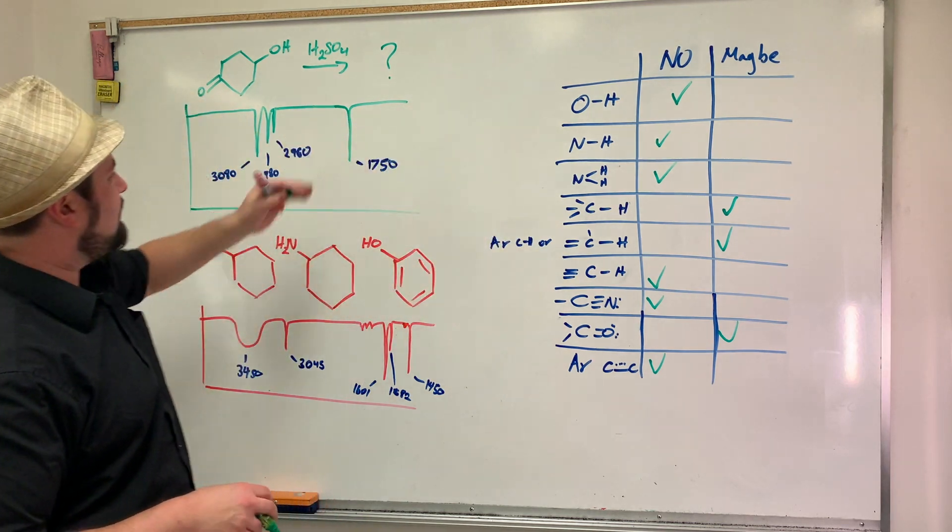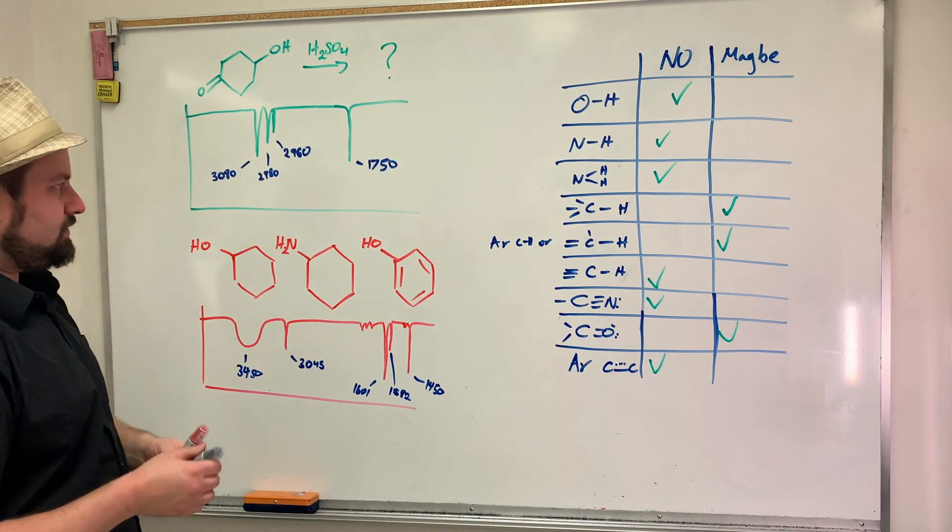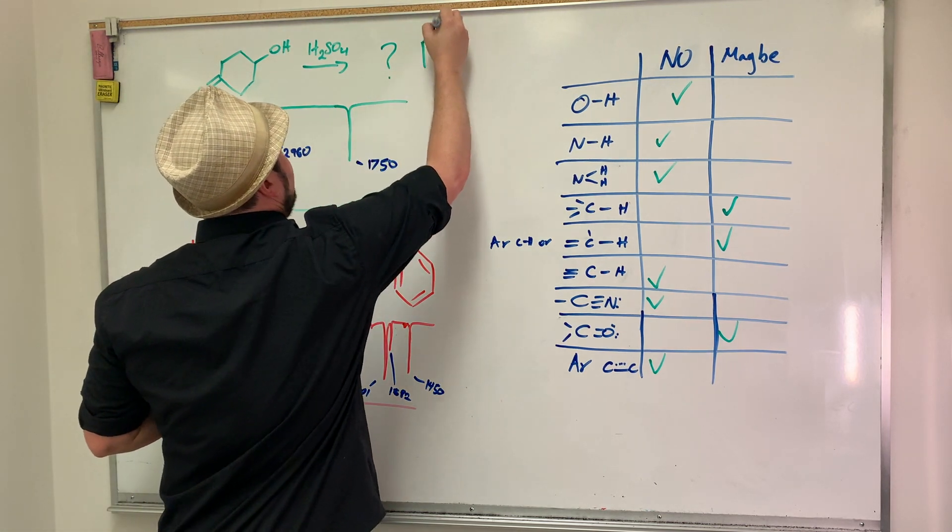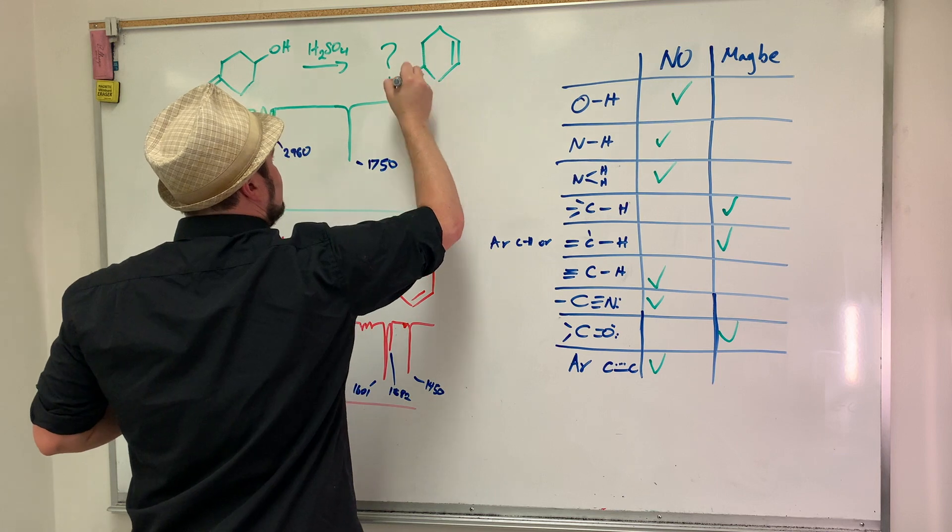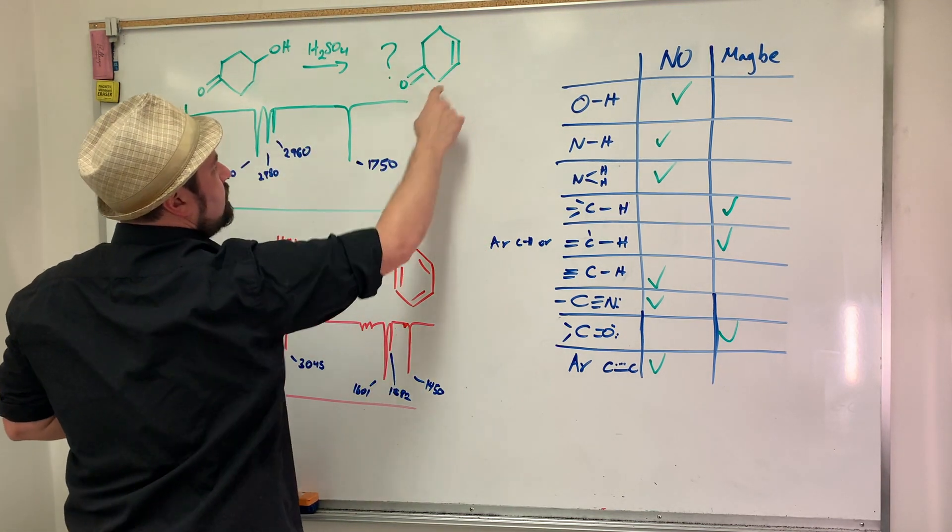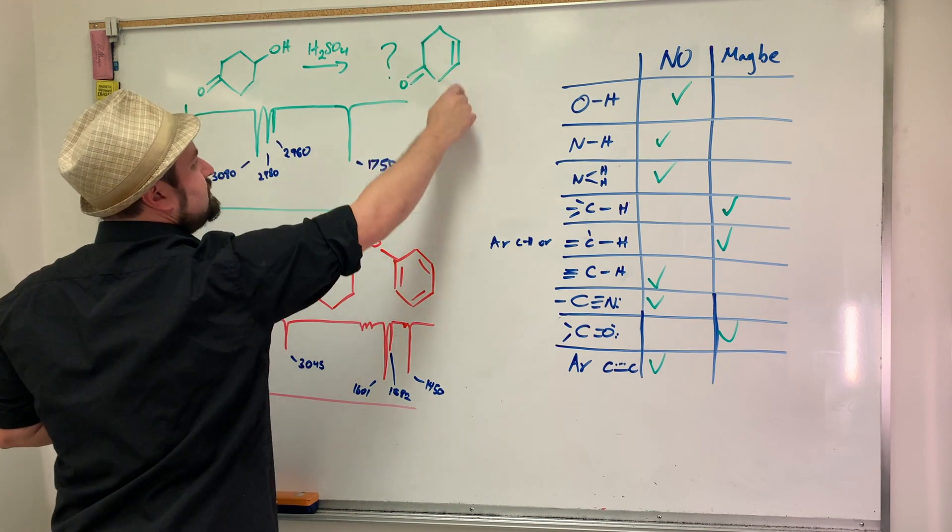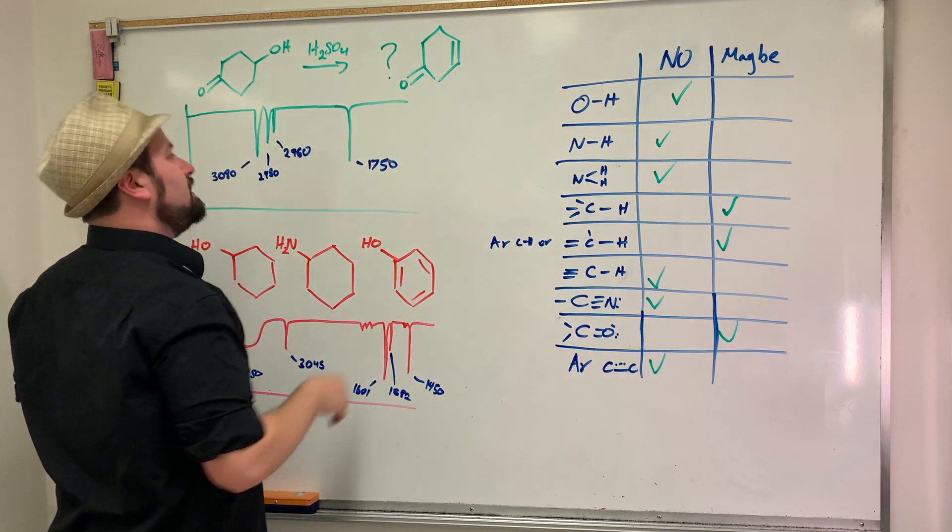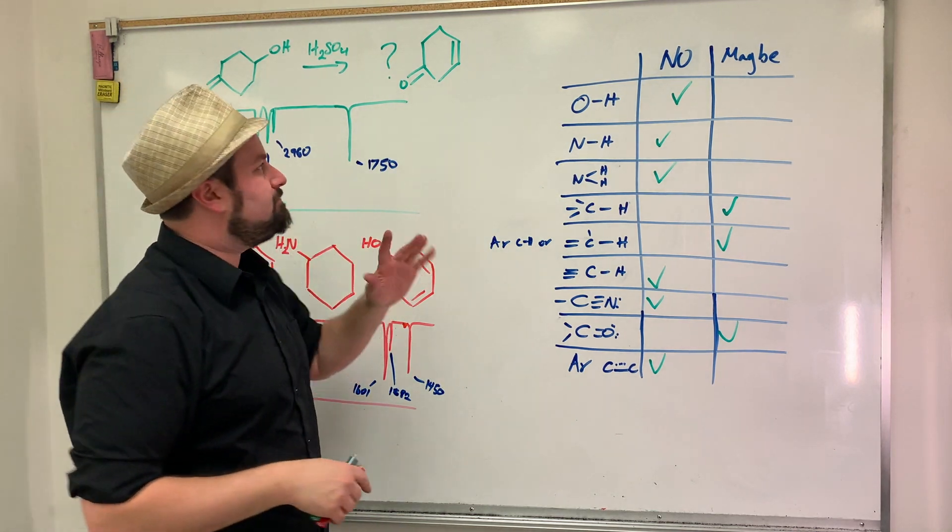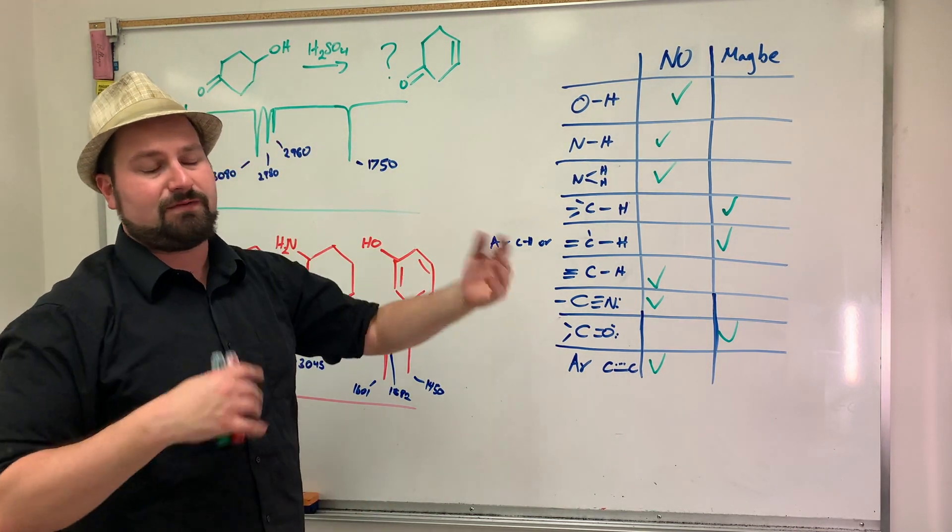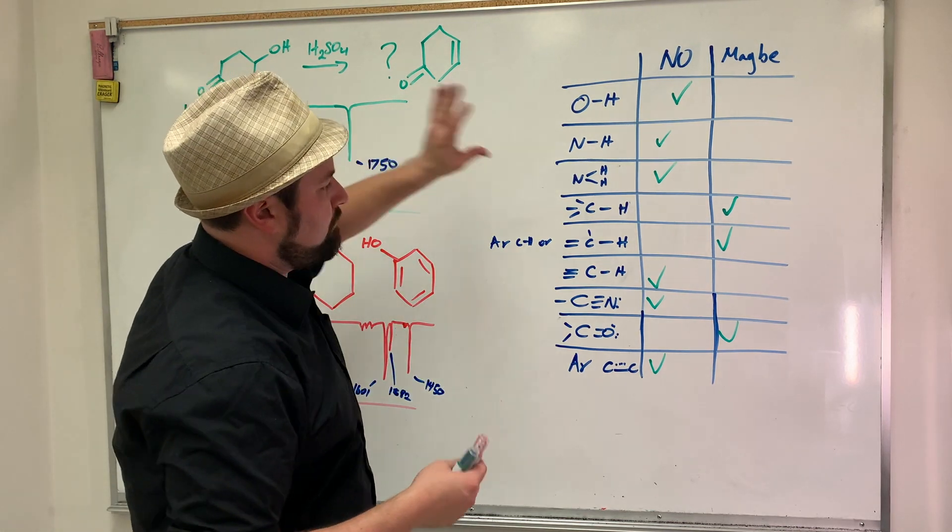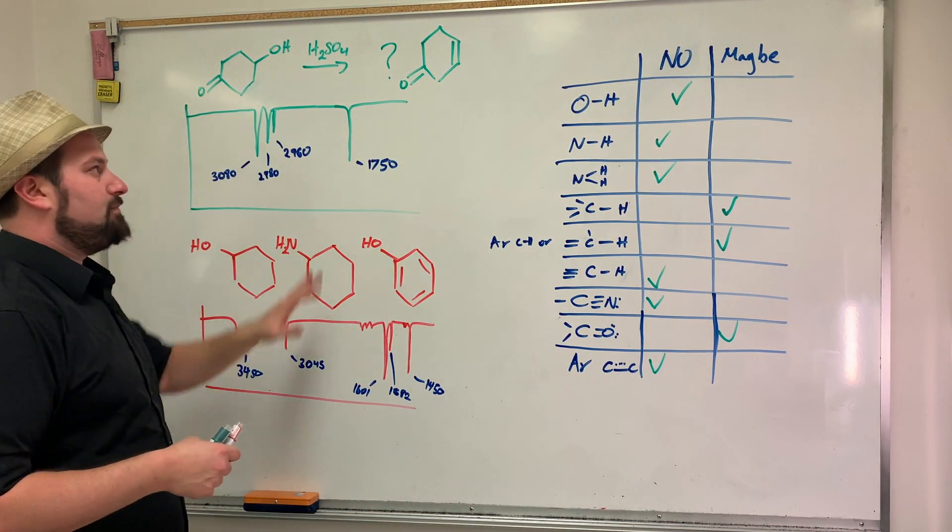So that already tells us that our group is probably not going to include all of these guys, but probably does. Now, if you know this reaction, you can already anticipate what this should be. This should eventually be something like this, at which point we would expect to see a double bond. We would expect to see single bonded CHs, and we expect to see a carbonyl. Now, we said maybe an aldehyde. We have no other supporting information for an aldehyde. So it's probably not that. And so when we report it, we would report it probably like this.